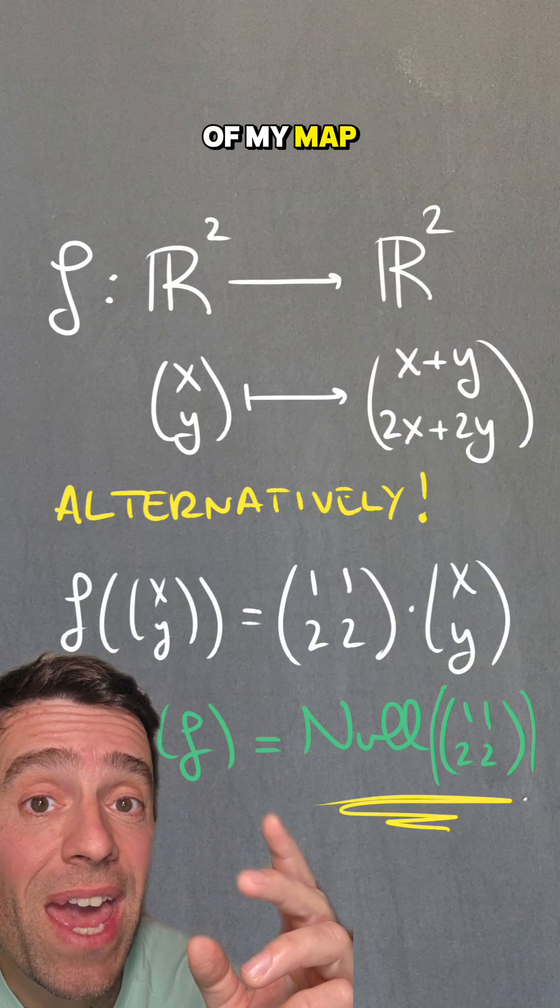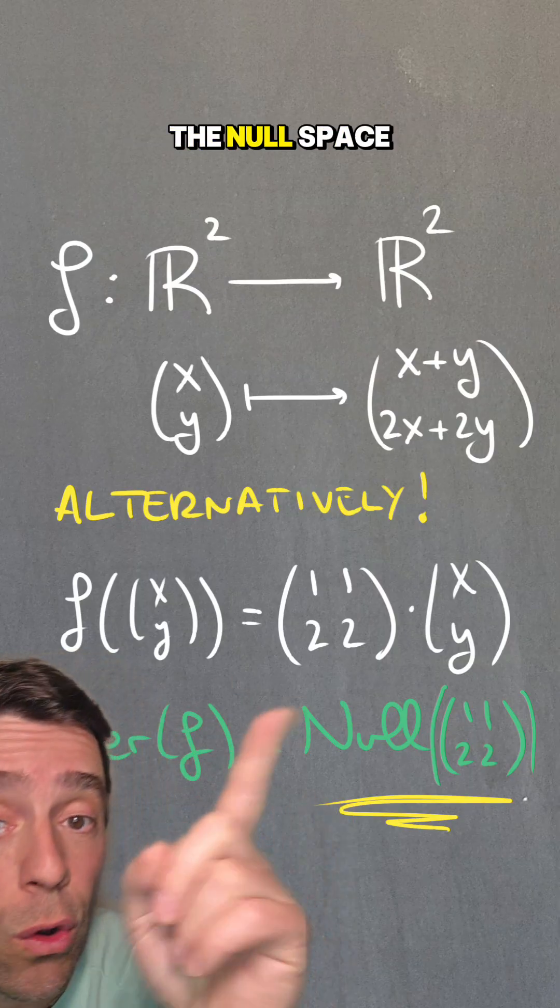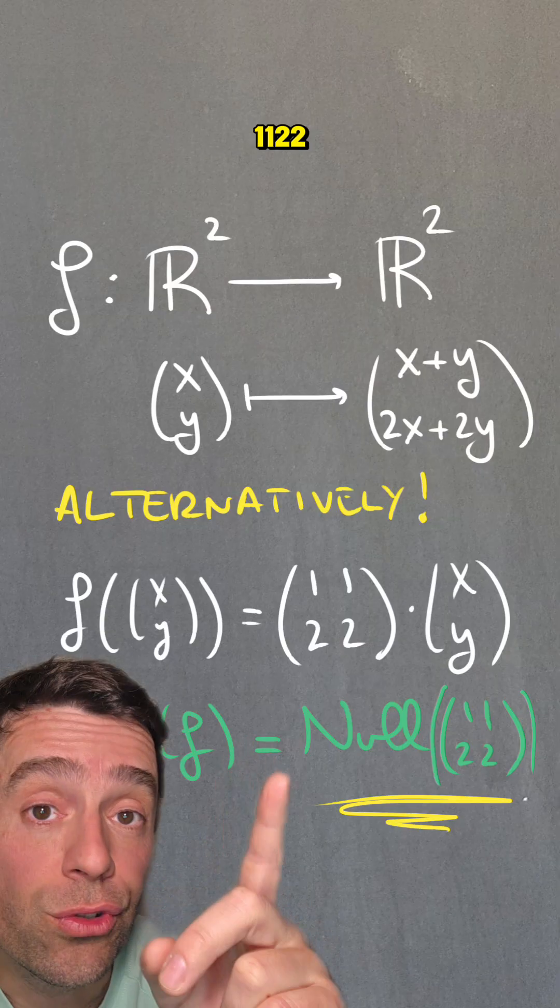Therefore, the kernel of my map f is equal to the null space of that matrix [[1,1],[2,2]].